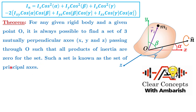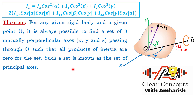If you choose X, Y, Z as principal axes — so that IXY = IYZ = IZX = 0 — the formula becomes very simple. All those product-of-inertia terms go to zero, and the moment of inertia about the new axis reduces to: I_N = IX cos²α + IY cos²β + IZ cos²γ. This is a very handy formula, and for many geometries it is easy to locate the principal axes.